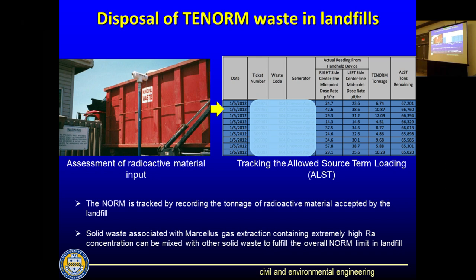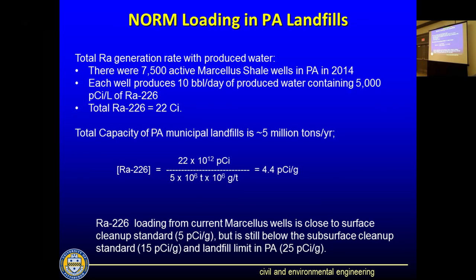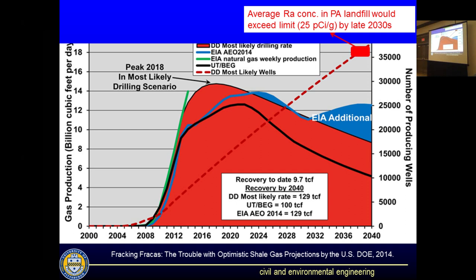Another issue high on my radar screen is NORM in Pennsylvania, because we have the most radiogenic formation being fracked right now. There is very little NORM being generated comparatively, and most goes into landfills — each landfill has an annual limit and as long as you dilute it with garbage to stay below 25 picocuries per gram, you're fine. But when I did these calculations at 7,500 wells, total radioactivity was 22 curies, which when divided by the volume of solid waste in Pennsylvania stayed below 5 picocuries. However, projecting to 35,000 wells, there will be so much NORM coming out that you can't dilute it with all the garbage produced in Pennsylvania — somebody will have to ship it to Michigan or Utah and pay $400 per ton for disposal.